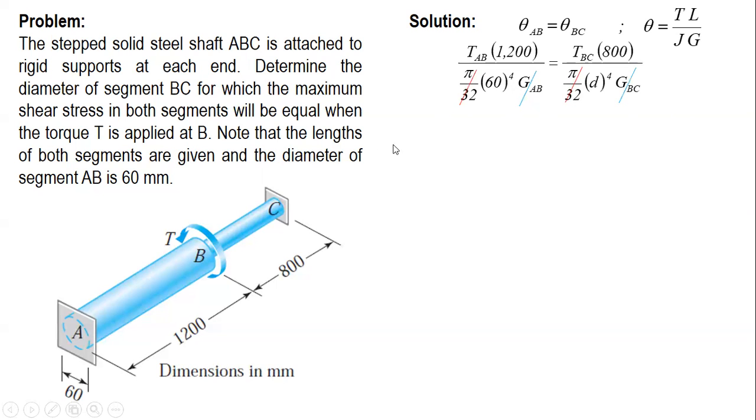So from here we can have an expression of TAB in terms of TBC. So 60 raised to 4 will be transferred here across multiplication, and then 1,200 transfers to the denominator. The result is this. So this will be equation 1.